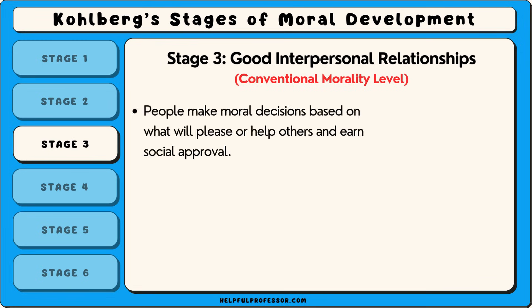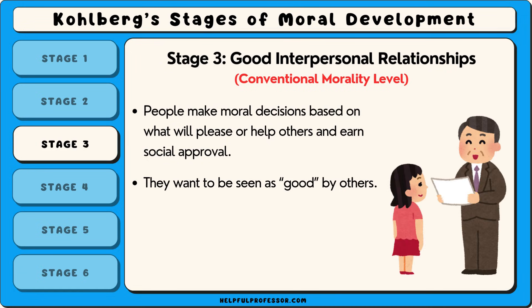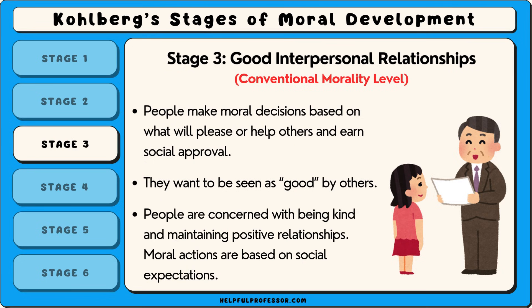In this stage, people make moral decisions based on what will please or help others and earn social approval. They want to be seen as good by others, especially authority figures like parents and teachers. An example of this would be a teenager who follows the rules because they want to be thought of as a good student by their teachers. People are concerned with being kind and maintaining positive relationships, and moral actions are based on social expectations.